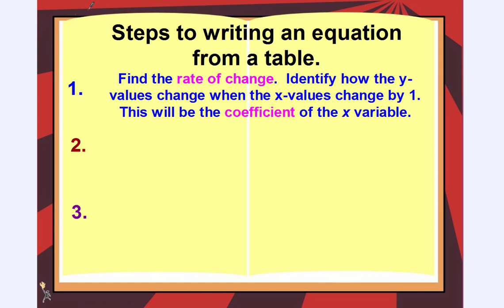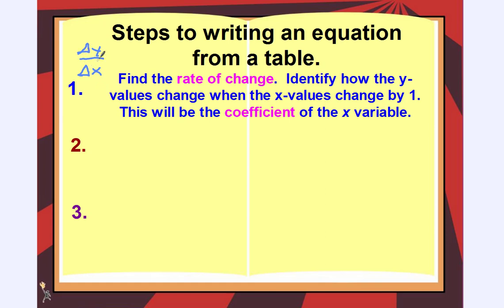There's a special way that we find the rate of change. We're going to write the rate of change in fraction format. In the numerator, we're going to write a little triangle y, and then in the denominator, we have another triangle x. This represents the change in y over the change in x. So the triangles represent change — we're going to write the change in y over the change in x. Be careful, don't mix them up. Y goes first — y goes in the numerator.